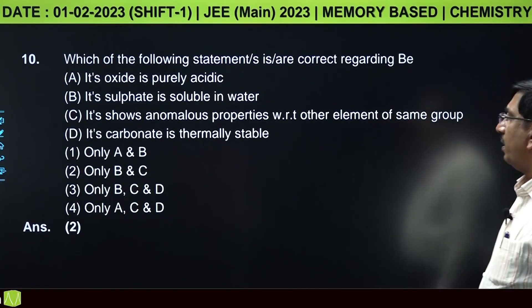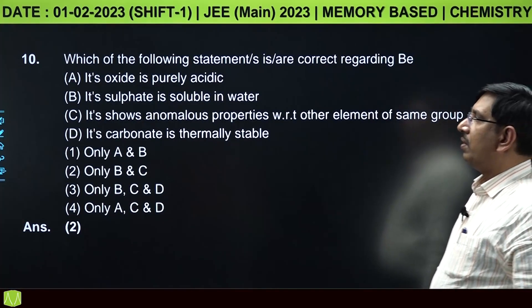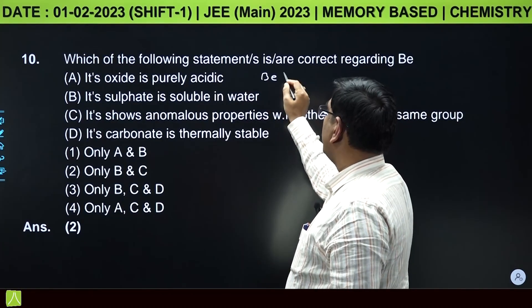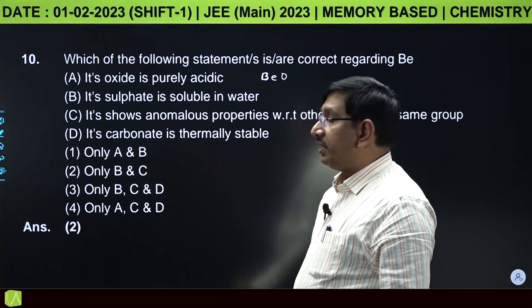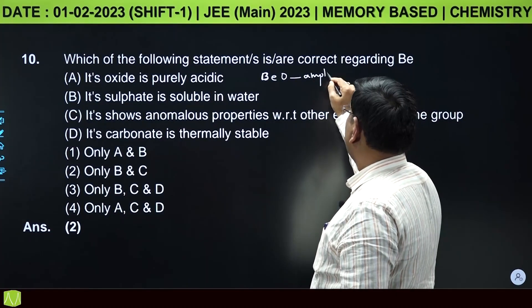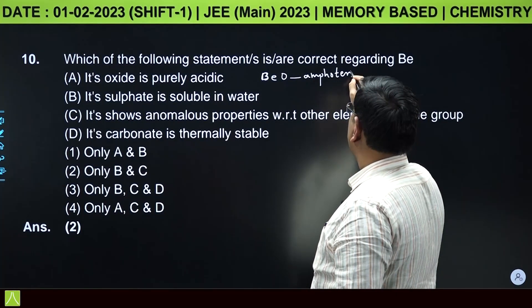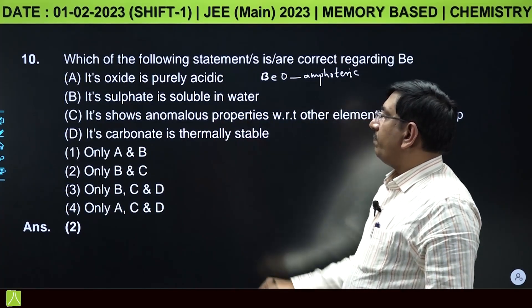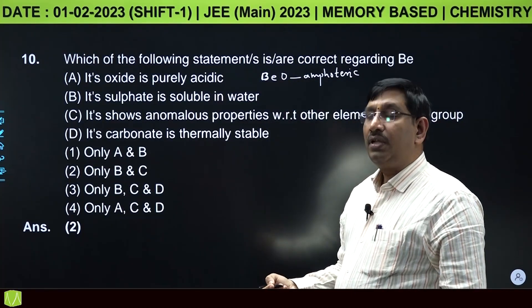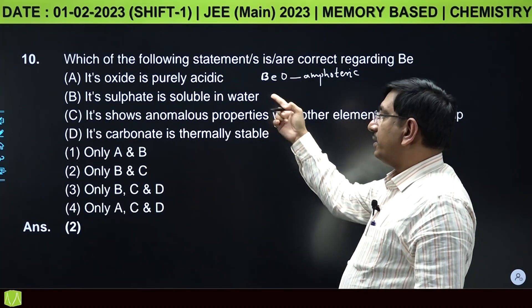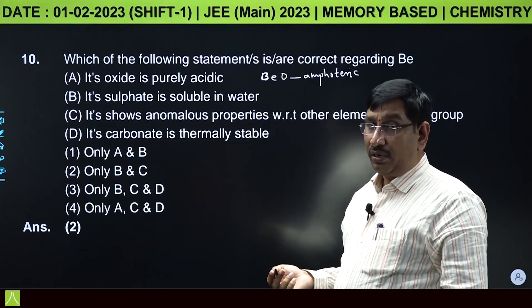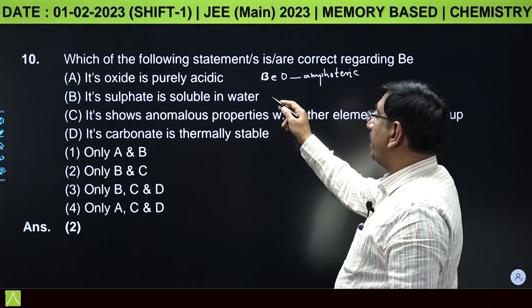Which statements are correct regarding beryllium? Its oxide is purely acidic - no, beryllium oxide is amphoteric in nature, not purely acidic. Its sulphate is soluble in water - yes, correct. The solubility of alkaline earth metal sulphates decreases down the group, so beryllium sulphate and magnesium sulphate are readily soluble.